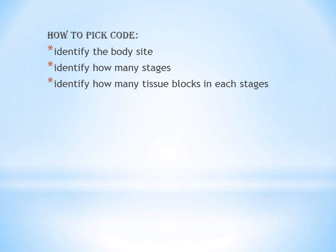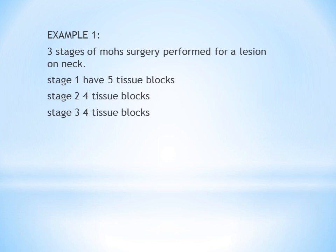We will do 3 examples. First example: 3 stages of Mohs surgery performed for a lesion on the neck. Stage 1 has 5 tissue blocks, stage 2 has 4 tissue blocks, and stage 3 has 4 tissue blocks. Identify the site — it is neck. Number of stages — 3. Tissue blocks per stage: stage 1 has 5, stage 2 has 4, stage 3 has 4 — all at or below 5, so nothing extra.